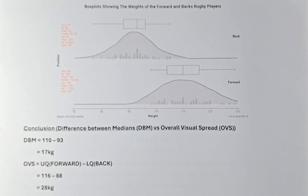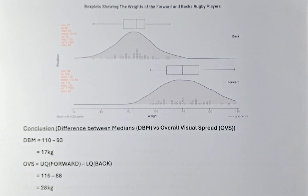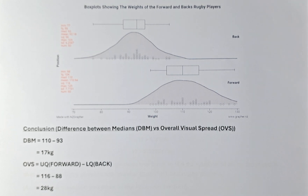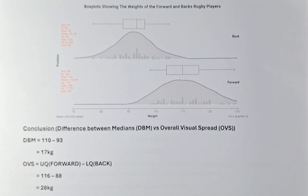This is called the DBM versus the OVS. DBM stands for difference between medians and OVS stands for overall visual spread. We are going to find out whether DBM is greater than one third of the OVS if the sample size is 30. If the sample size is 100 for each, then it's DBM greater than one fifth of the OVS. If it is around a thousand, then it's DBM greater than one tenth of the OVS. Because our sample size is 30, we can use one third, or if you want to be closer, one quarter, but we will stick with one third.